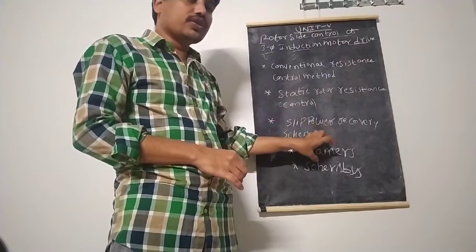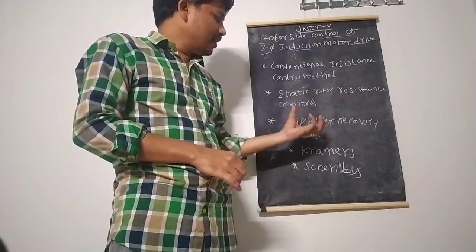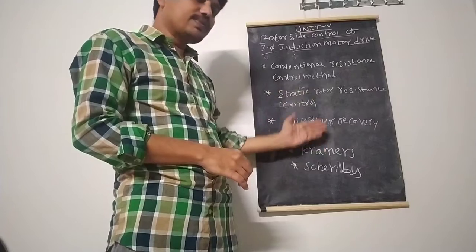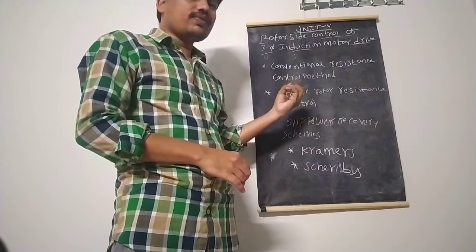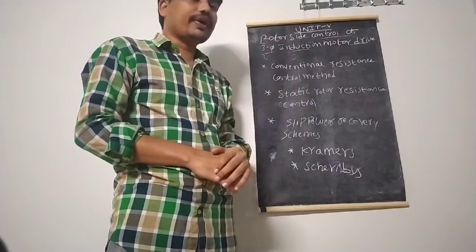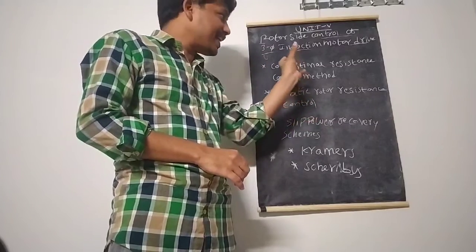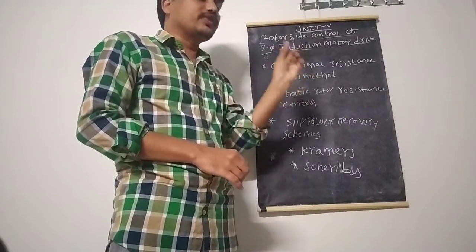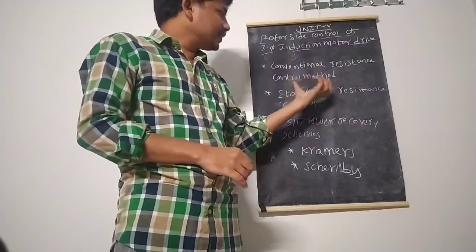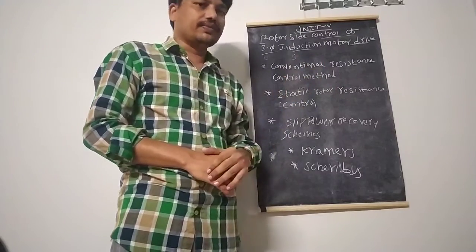These are the slip power recovery schemes, which involve speed control, recovery of slip power, and ensuring that the energy is not wasted — that is the main importance of the slip power recovery schemes. After discussion of static resistance and slip power recovery schemes, we will also work through some numerical problems and applications. This is the overview of Unit 5. In the next class, we are going to cover the conventional resistance control method as a literature review, to help understand the static rotor resistance control method. Thank you.